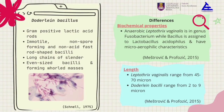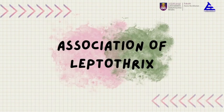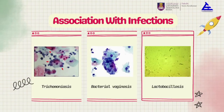Döderlein bacillus is a gram-positive lactic acid organism and most of its characteristics are nearly the same as Leptothrix. The most significant difference that we can observe is from their biochemical properties and also their length. In our reading, Leptothrix species usually presents in Trichomoniasis, bacterial vaginosis, and Lactobacillosis.